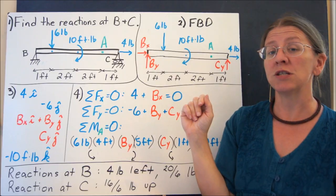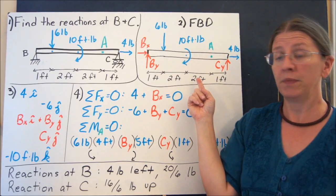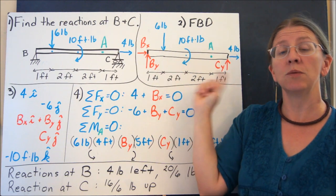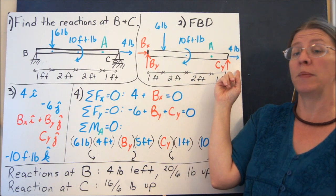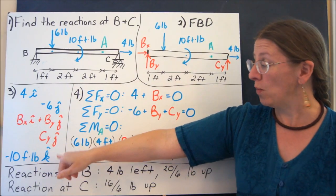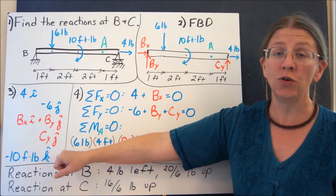To find the reactions at B and C, first draw the free body diagram. The pin will give me two forces. The roller at C will give me one. So this is my free body diagram. List your forces, list your moments, list any load you have.